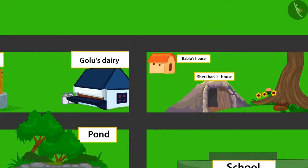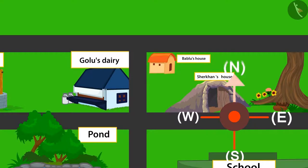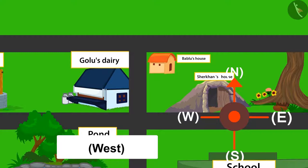If the direction towards the front of my home is North and to left would be West direction. Golu's Dairy is towards the West from my home. So, to go there, I will go towards West.